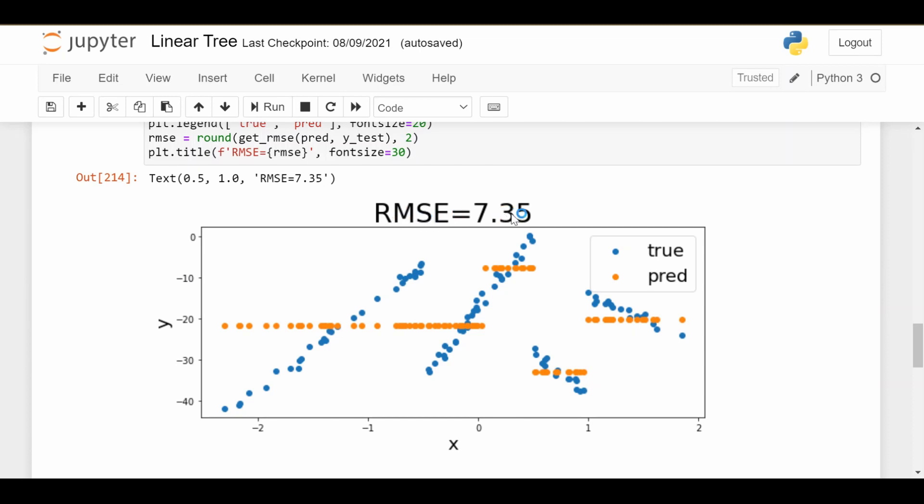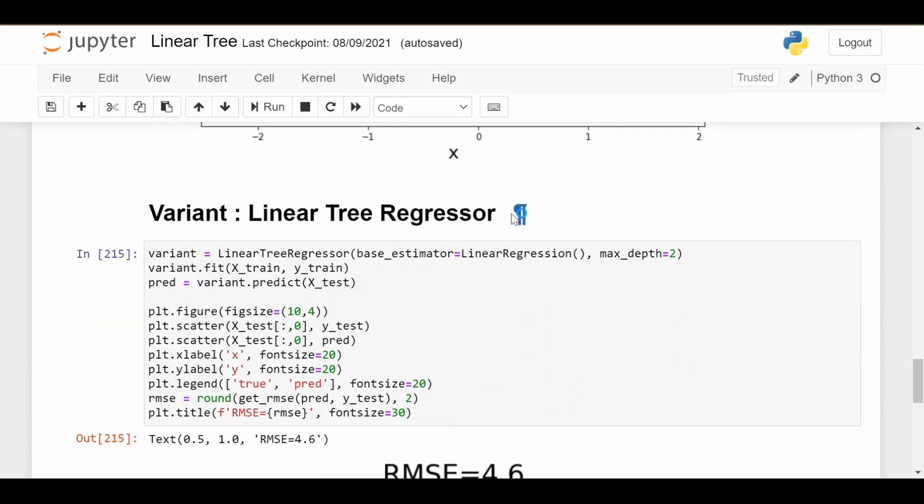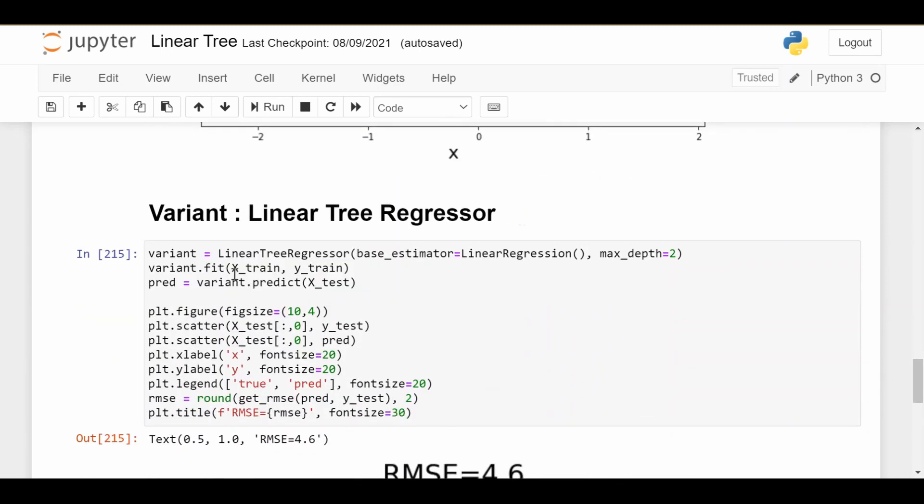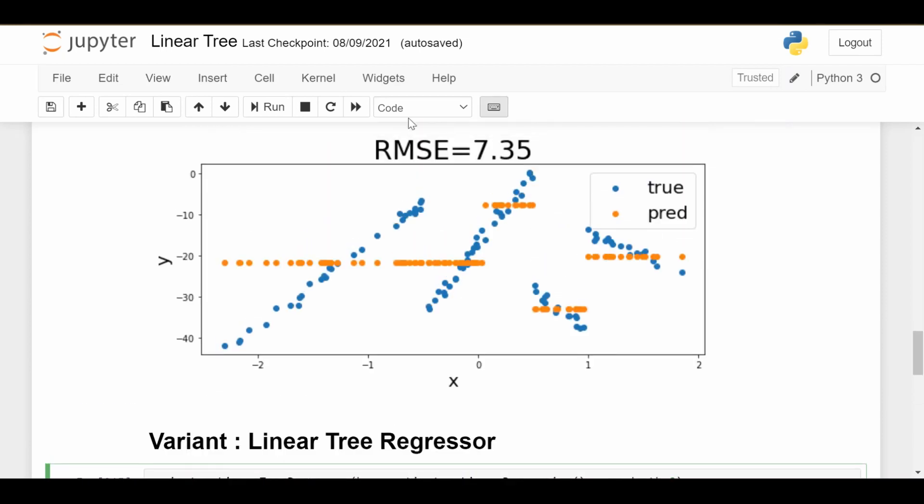Finally, linear trees. Let's look at this piece of code because this is the only really new code. We have a linear tree regressor—this is very parallel syntax to the sklearn syntax, which is very nice. The base estimator is a linear regression, and we have a max depth of 2. We also had a max depth of 2, by the way, for the tree. So we go ahead and fit it just like we would a normal sklearn model.